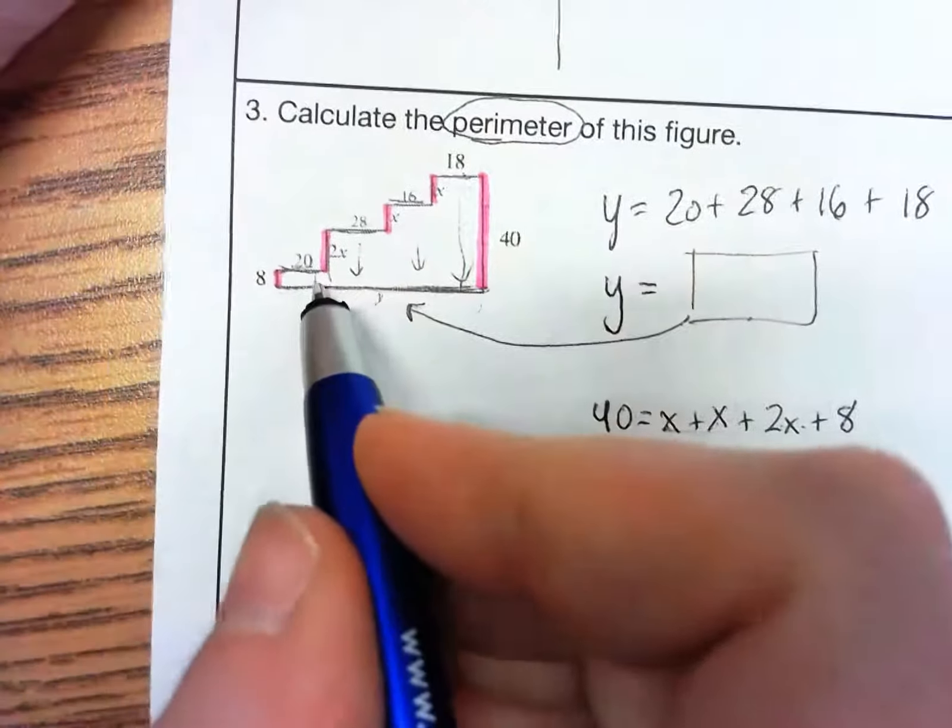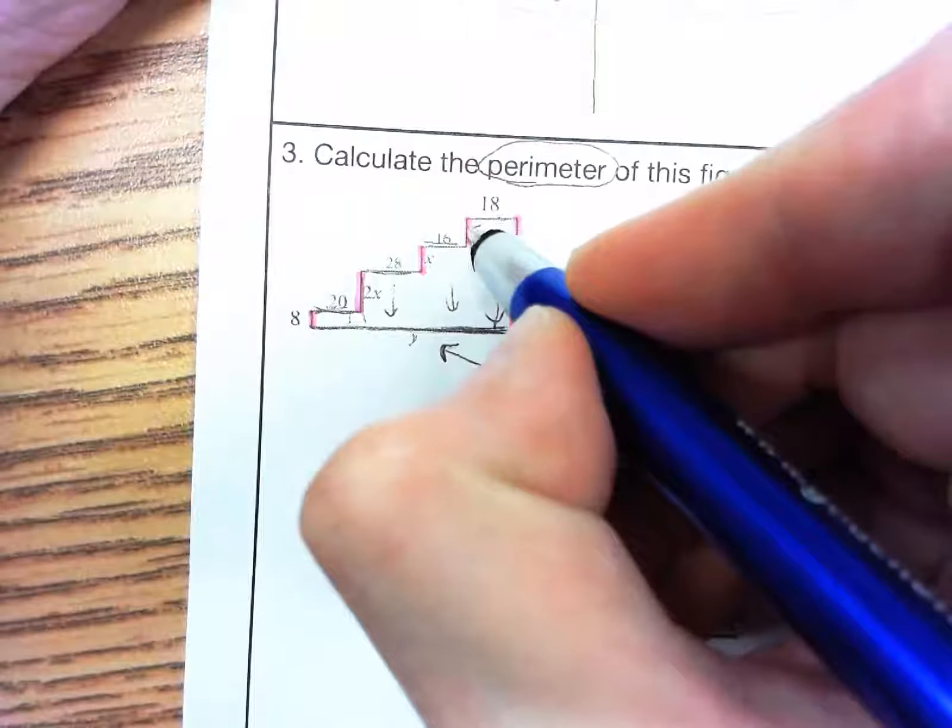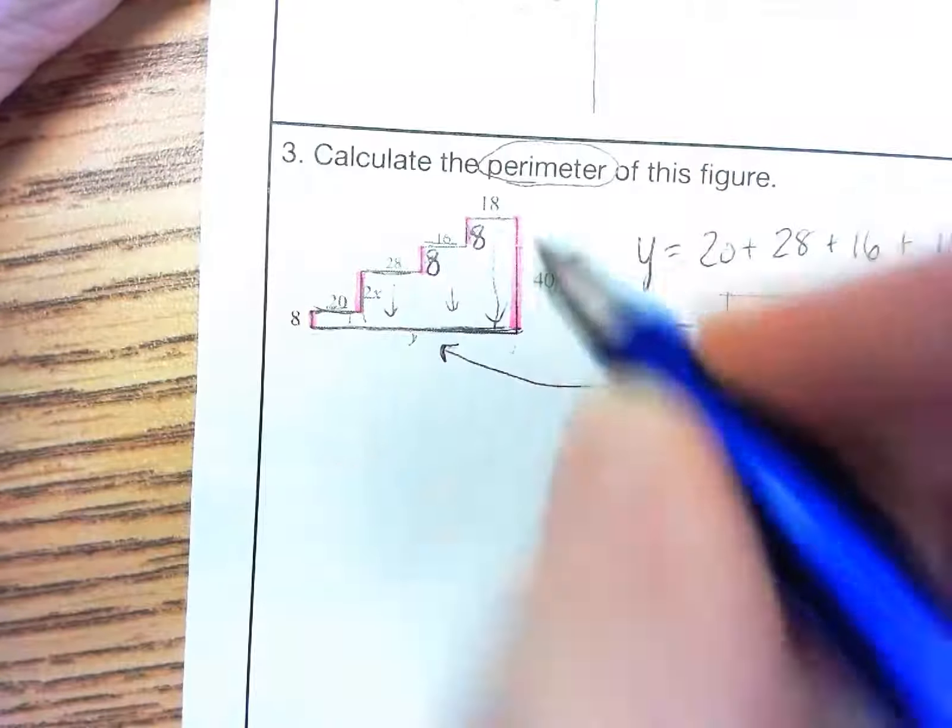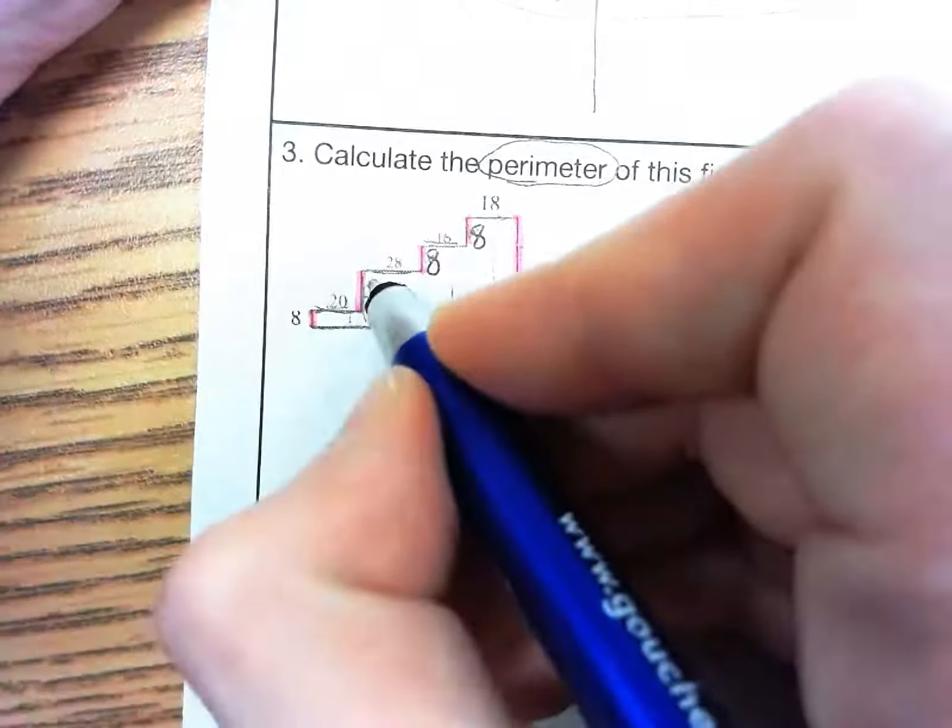So we know our x value is going to be 8. So I can plug in 8 for this x, 8 for this x, and then 2x would be 2 times 8, which would be 16.